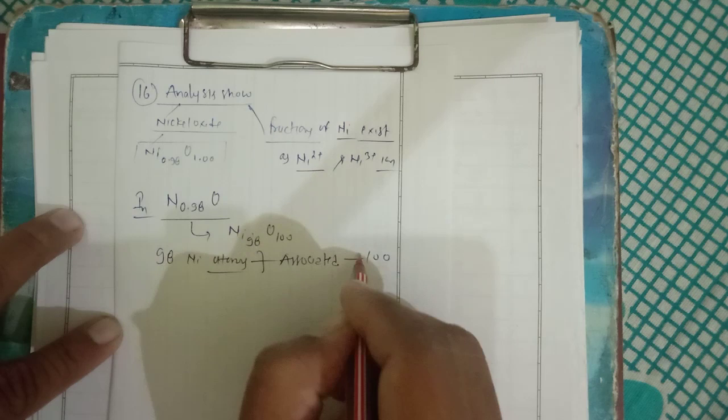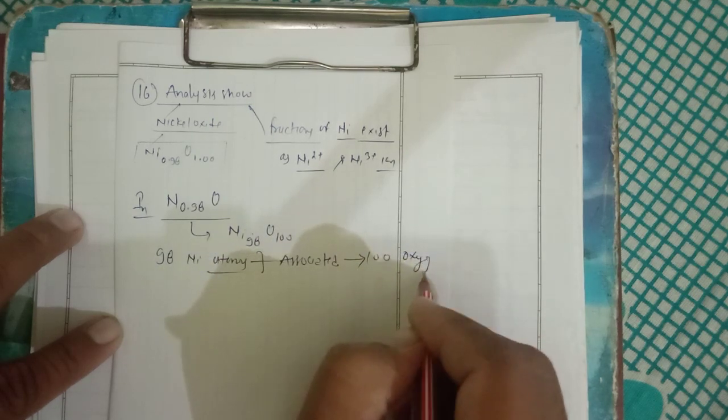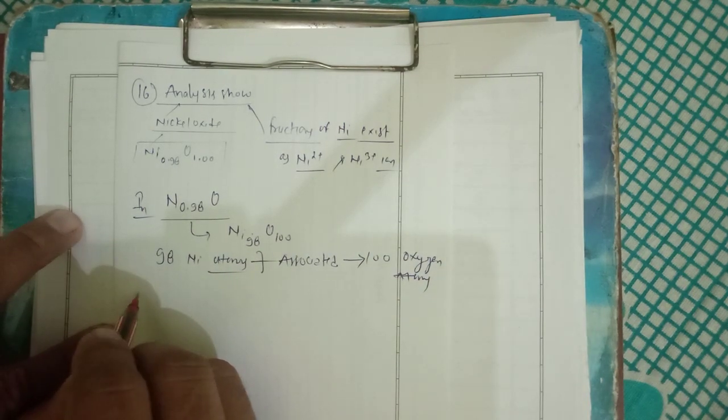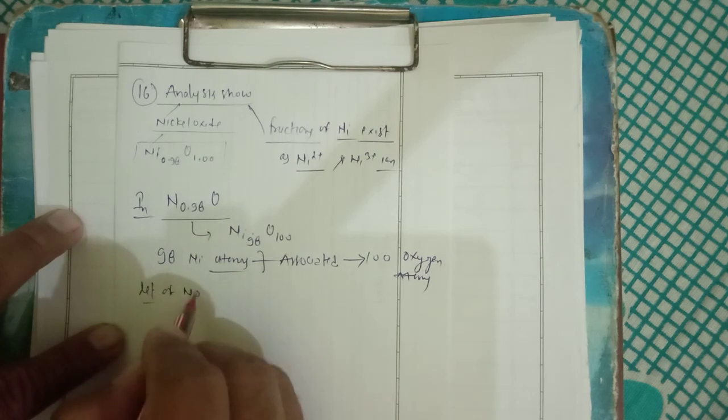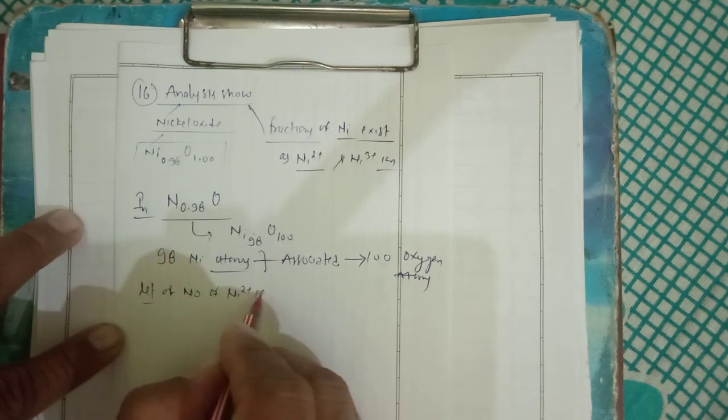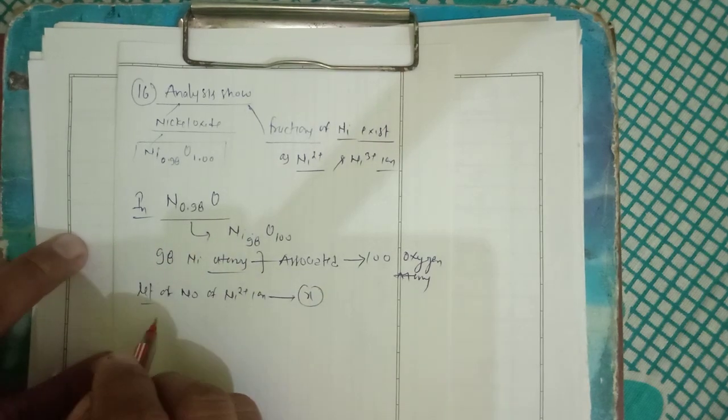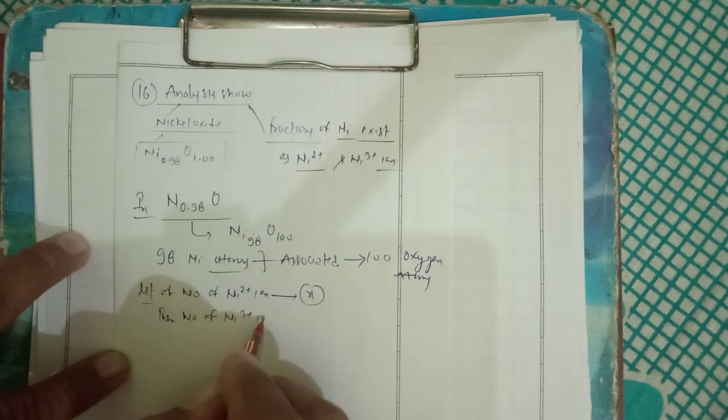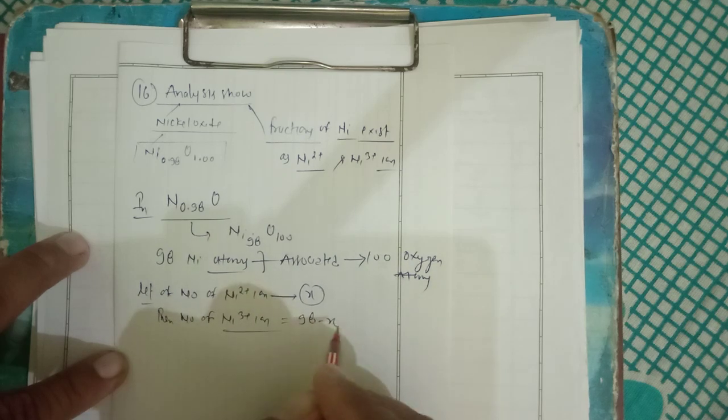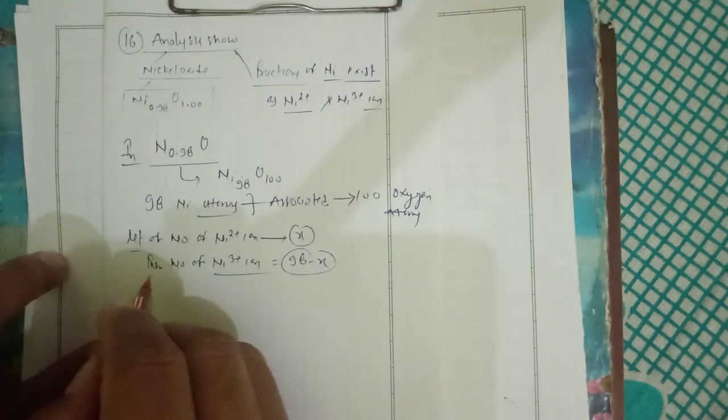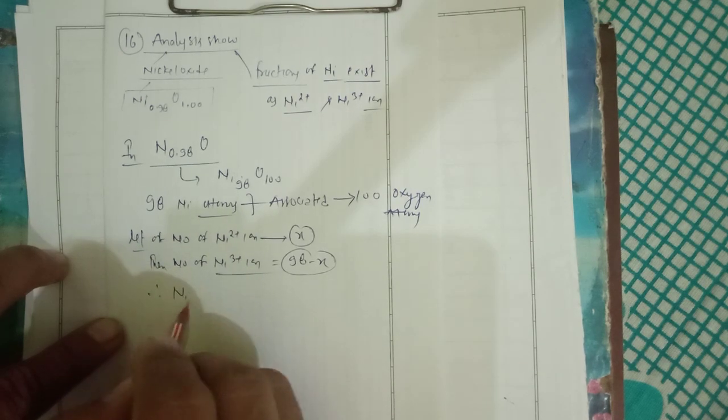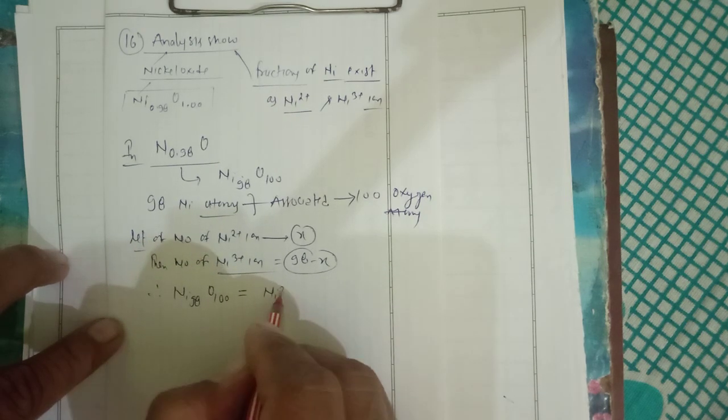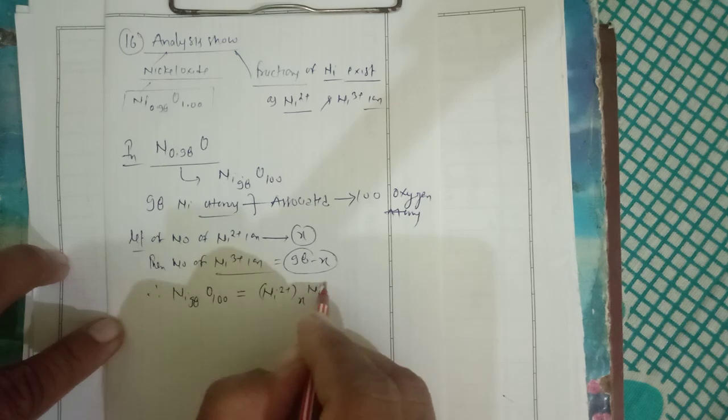Let the number of Ni²⁺ ions be x, then the number of Ni³⁺ ions will be 98 minus x. Therefore Ni₉₈O₁₀₀ can also be written as Ni²⁺ₓ Ni³⁺₉₈₋ₓ